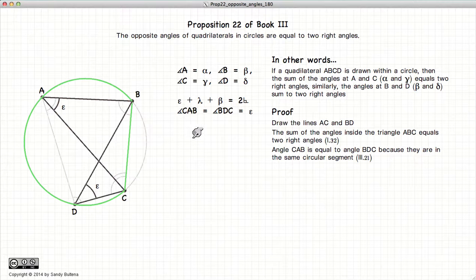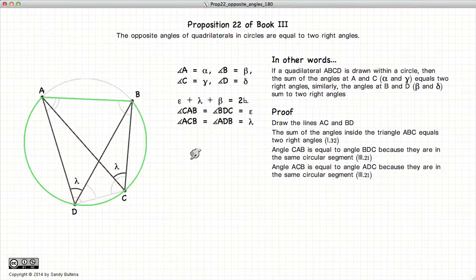Now we also know from Proposition 21 of Book 3 that the angles in a circular segment are equal. So angle A is in a circular segment, this green circular segment, and the point D also defines an angle inside the circular segment. So these two angles are equal. So BAC and BDC are equal, and we'll call this angle epsilon. Similarly, ACB and ADB are both angles within a circular segment, so they are equal, and we will call this angle lambda.